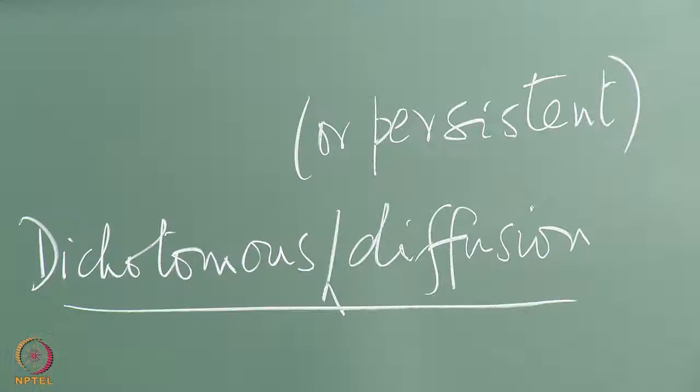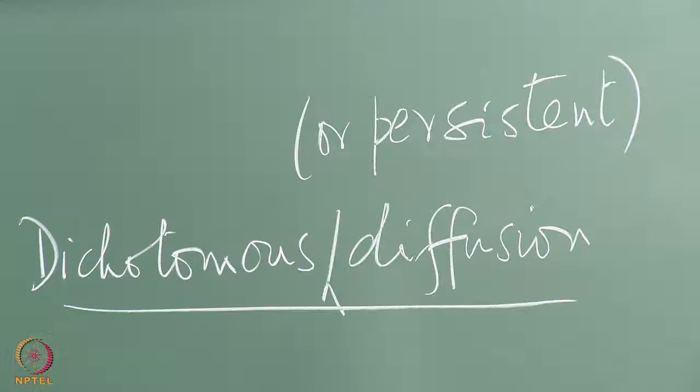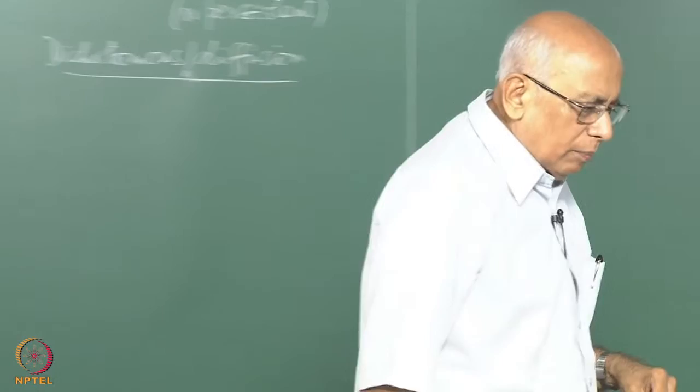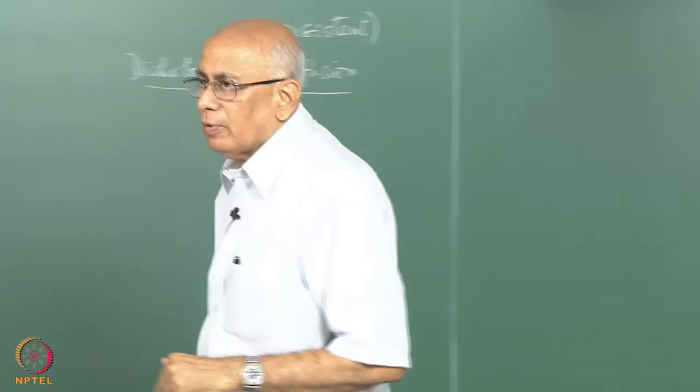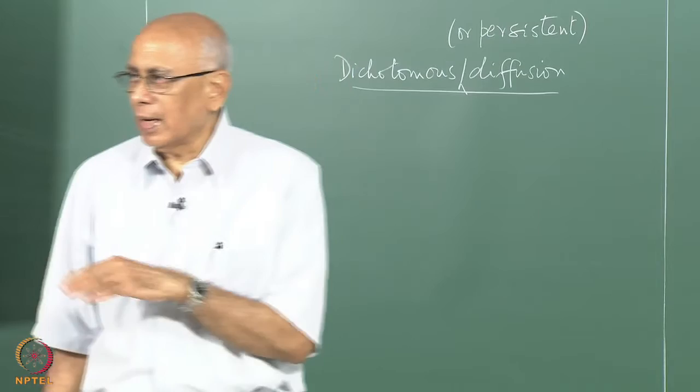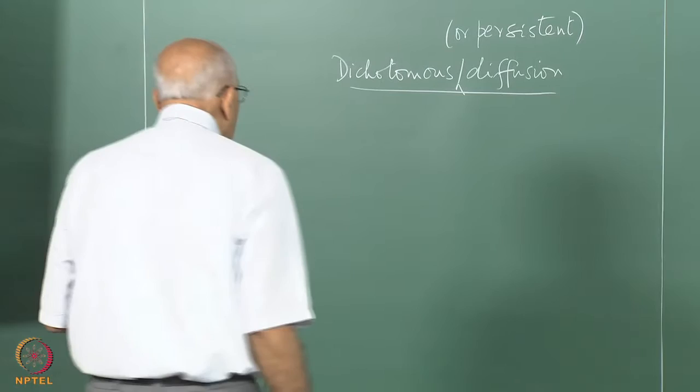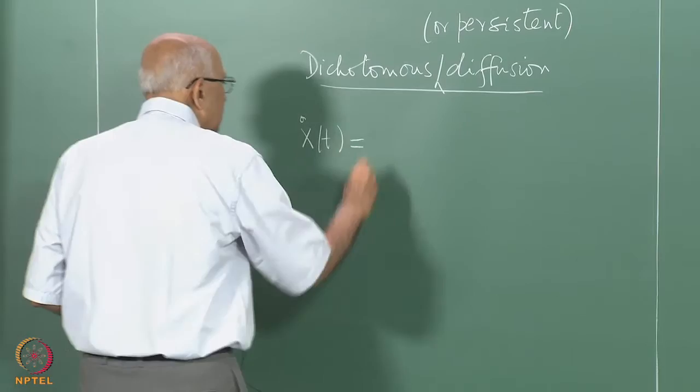We have in mind a particle diffusing along the x-axis, exactly as in the normal diffusion problem, but this time I specify the velocity of the particle to be fixed at some finite value but capable of reversing direction. So it either moves to the right or to the left with some fixed speed C. If I call the process X, then X-dot of t is a dichotomous Markov process taking values plus C or minus C.